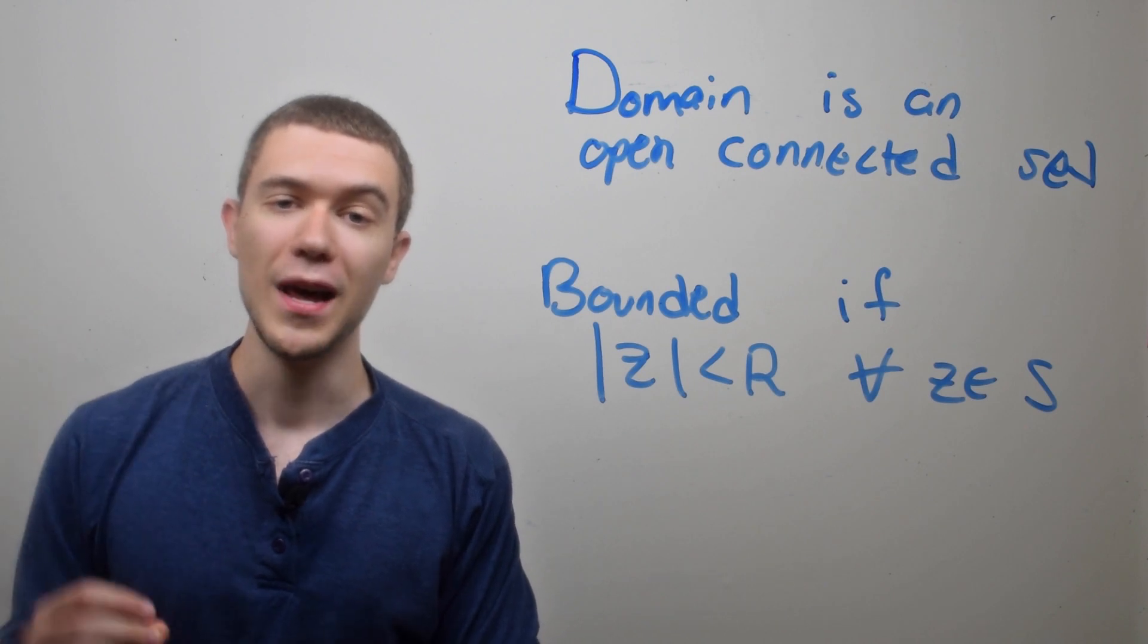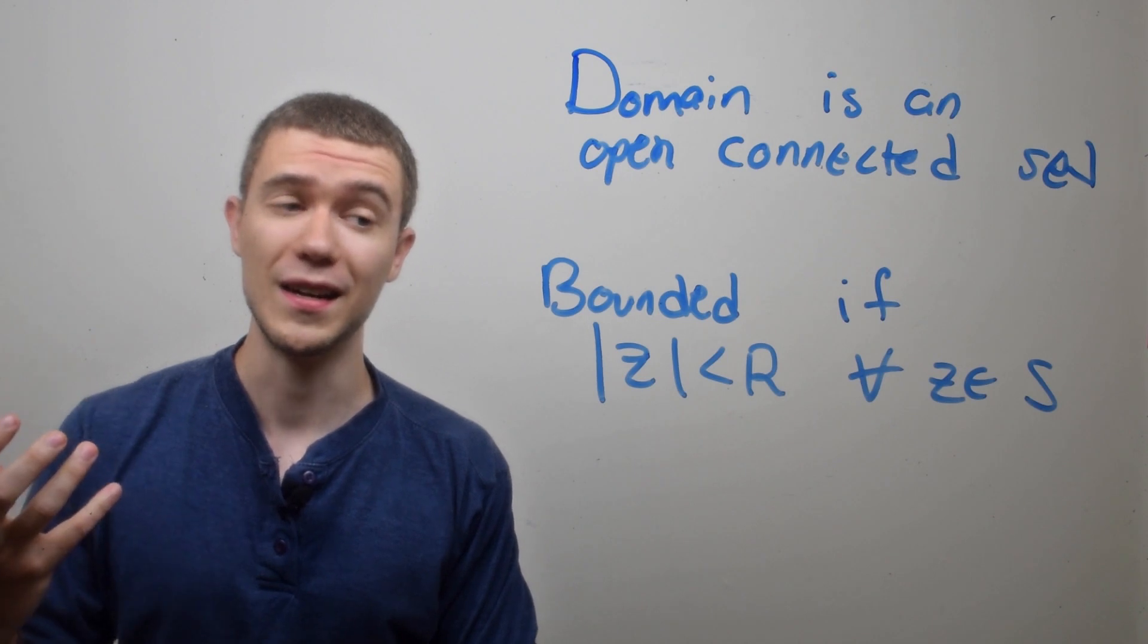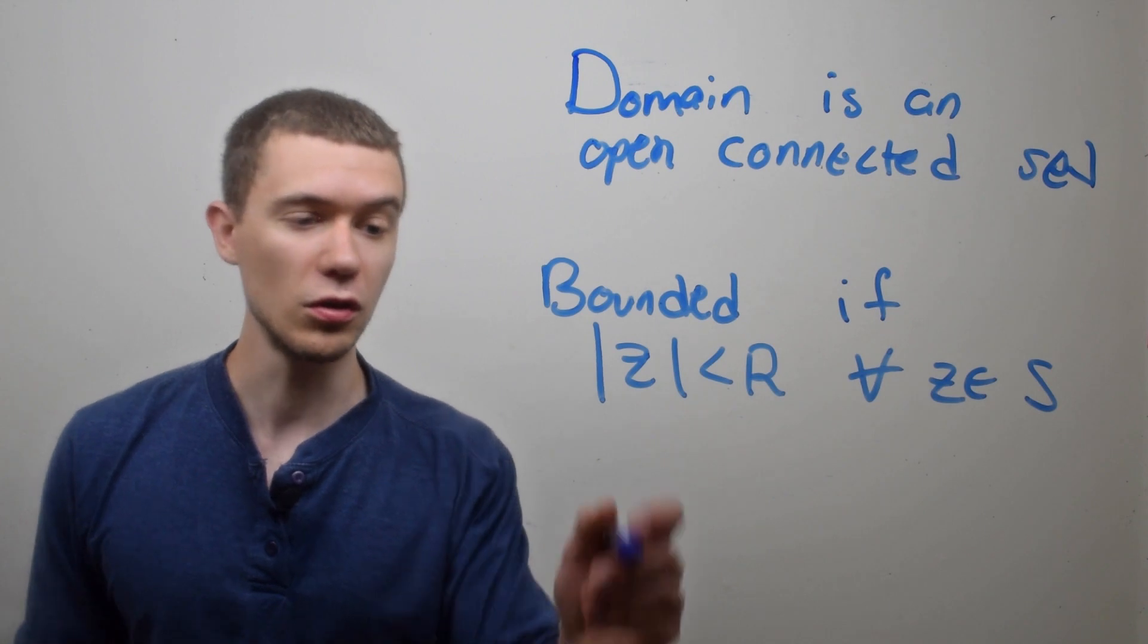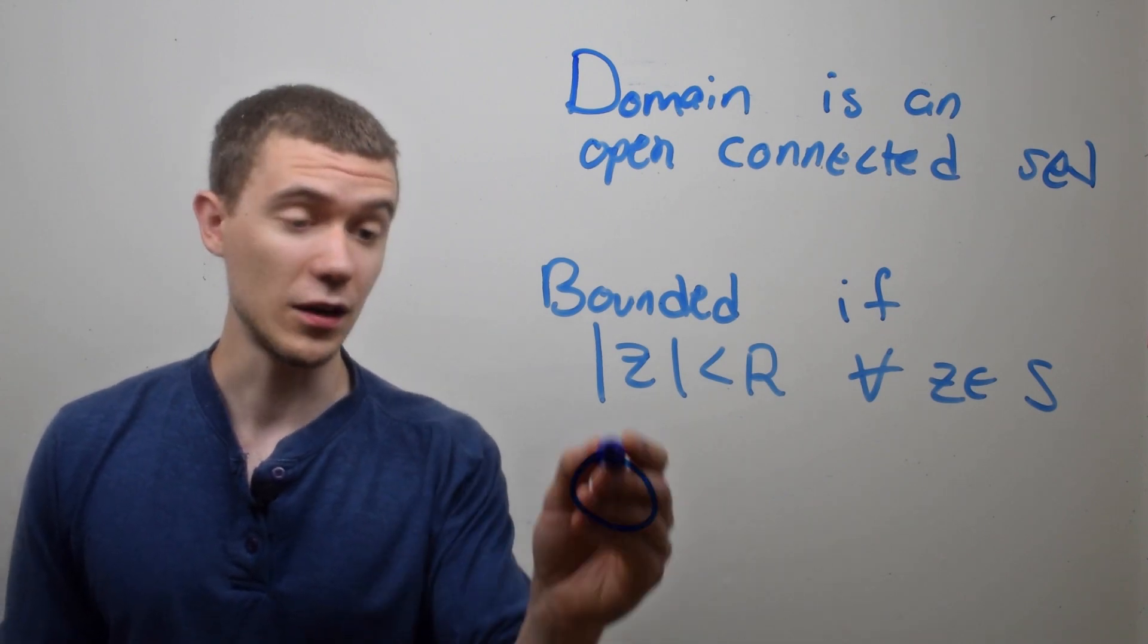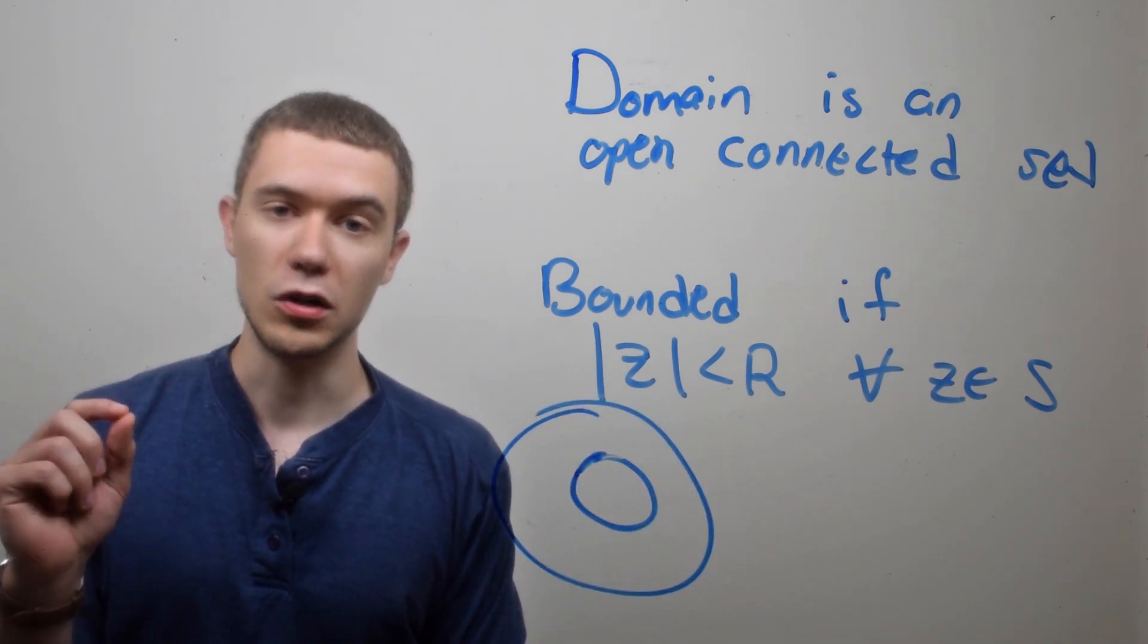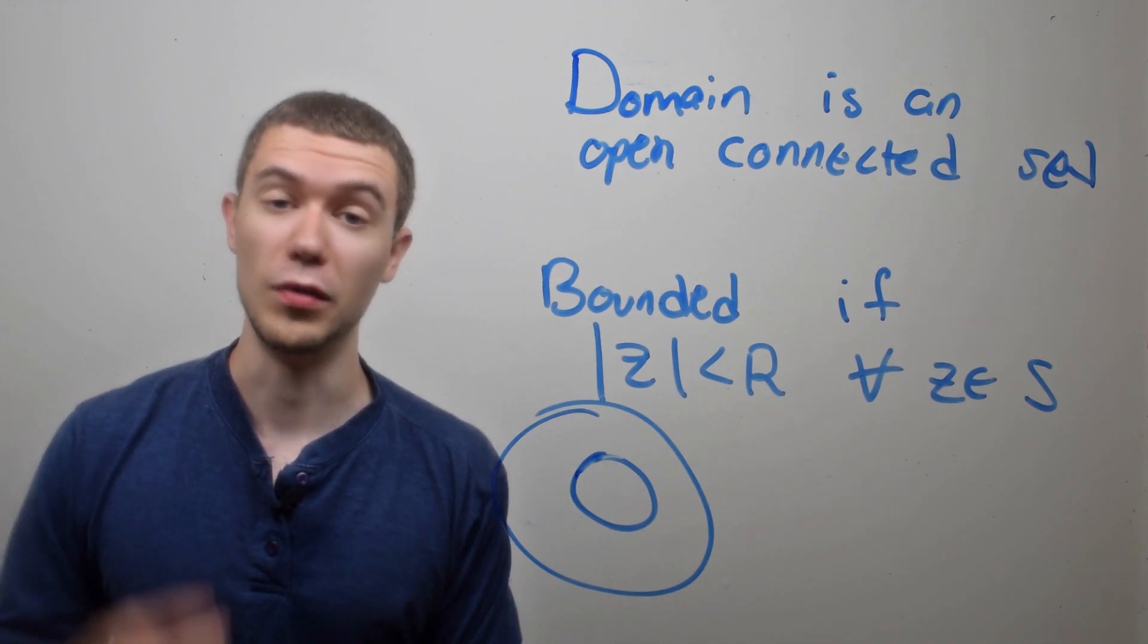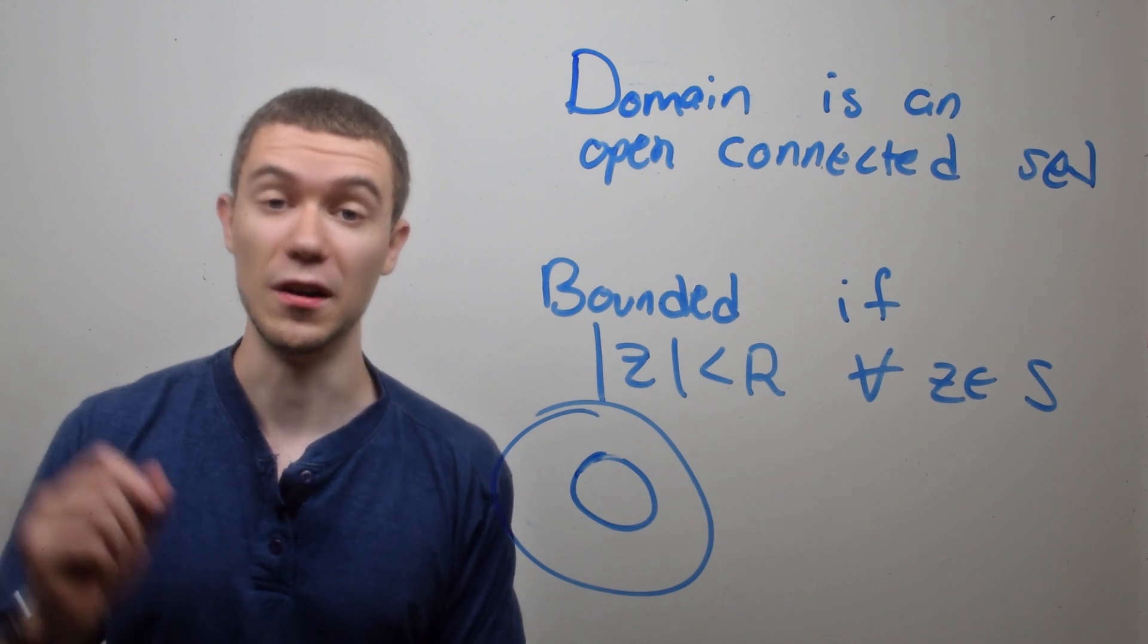Also a set is bounded if the modulus of Z, for all Z in that set, is less than some real number R. So you can think of our circle, our closed circle is bounded, it's actually bounded by another circle. As long as every modulus of a complex number in your set is less than some other real number, that set is bounded. If that's not the case, the set is unbounded.